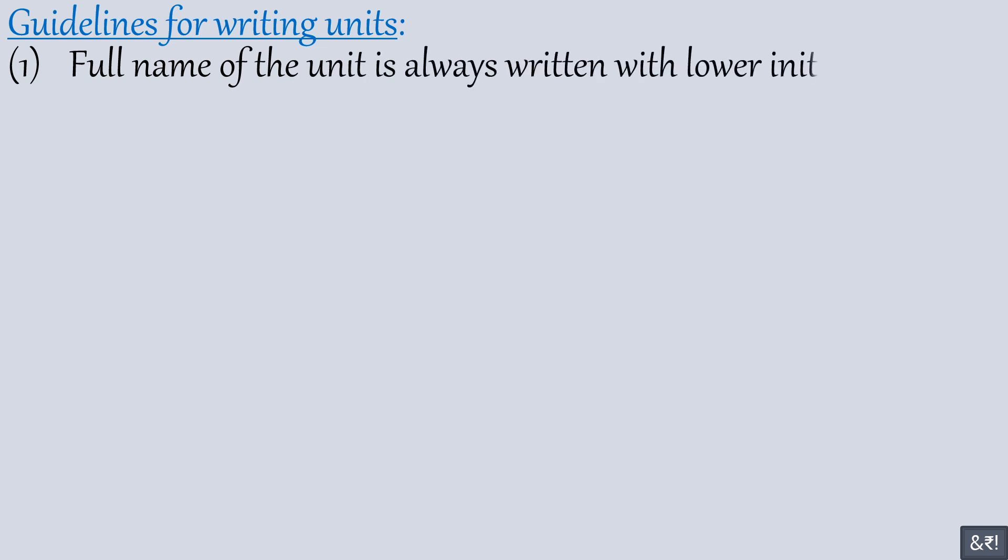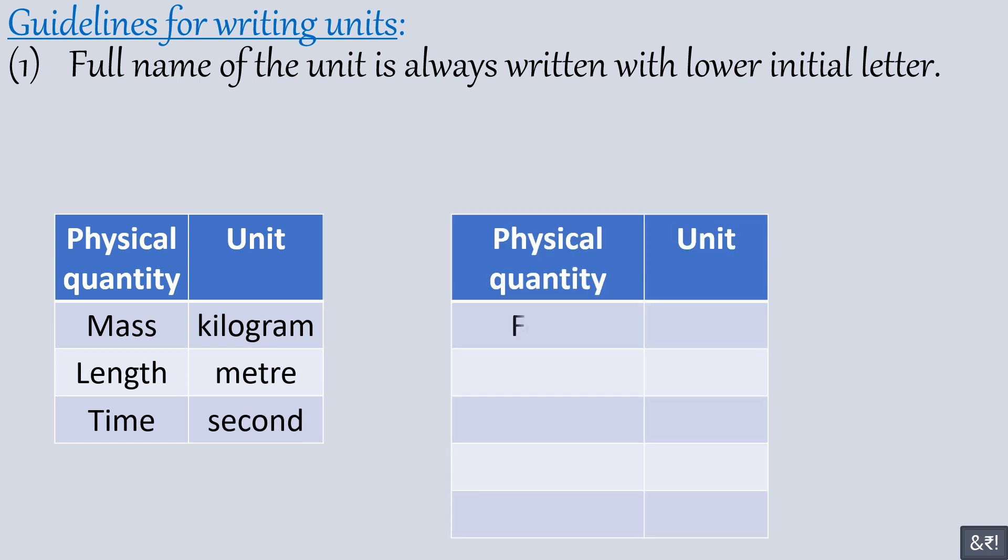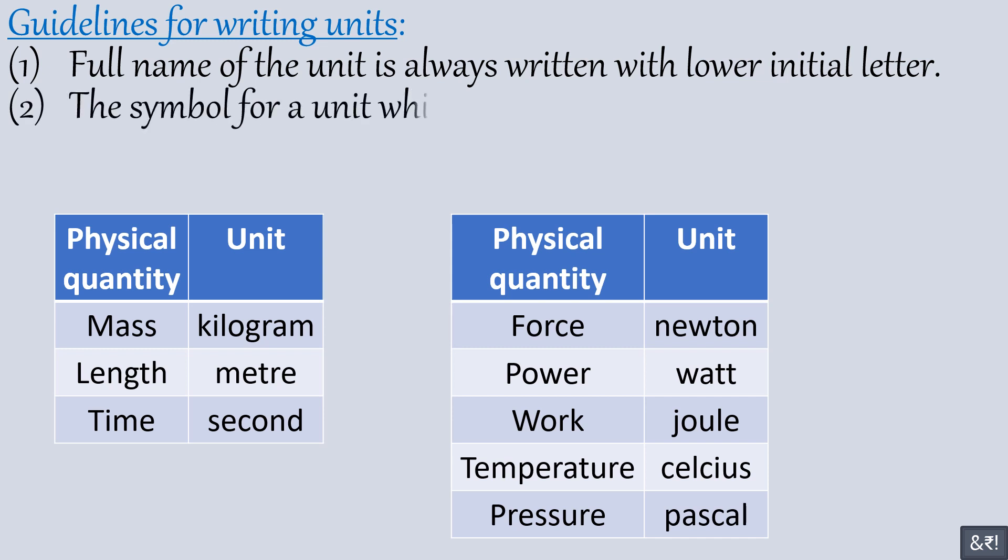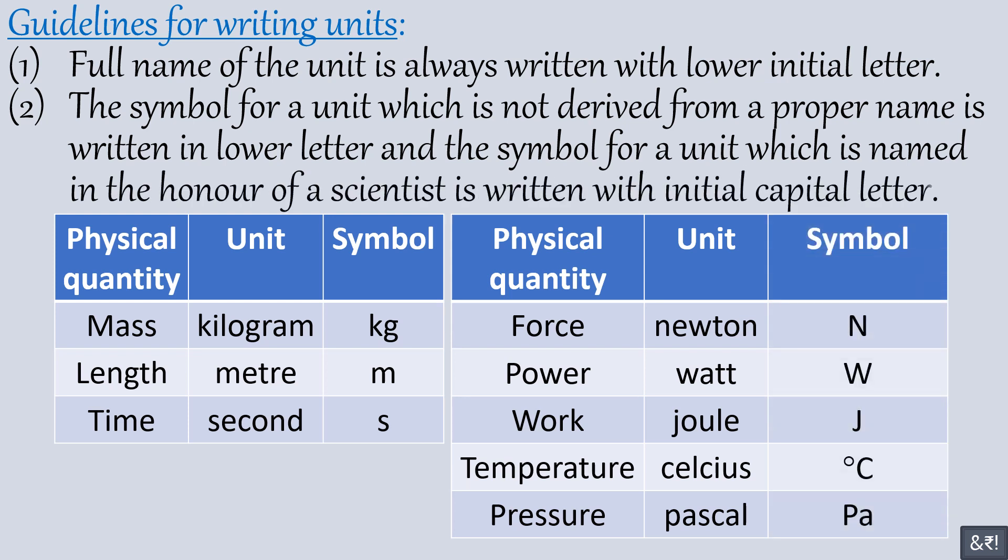Let us learn now guidelines for writing units. First, full name of the unit is always written with lower initial letter. Second, the symbol for a unit which is not derived from a proper name is written in lower letter, and the symbol for a unit which is named in the honor of a scientist is written with initial capital letter.